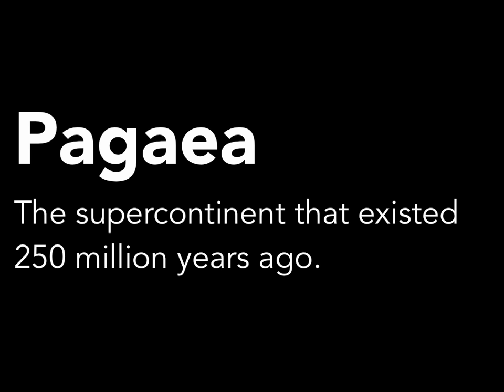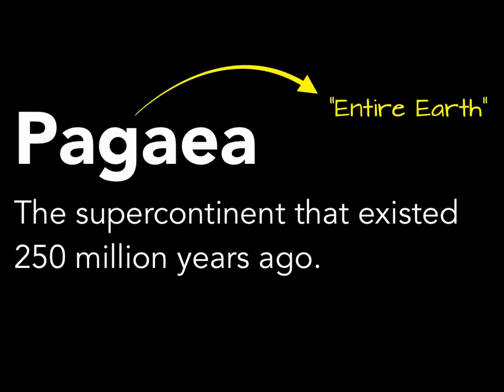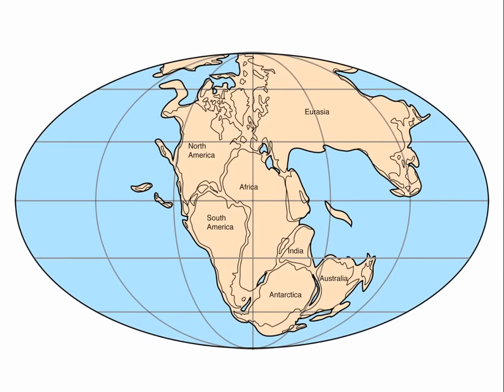Pangaea is actually an appropriate name — it's a Greek term that means 'entire earth' or 'all earth.' So if you think about it, when all the continents were together, it would make sense to call that landmass Pangaea. Here's what he thought it looked like. You can see within this diagram the modern-day continents of North America, Africa, South America, Antarctica, India, etc., but they don't look quite the same way they do today — they're in totally different positions, all connected into one supercontinent.